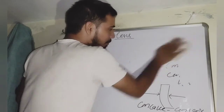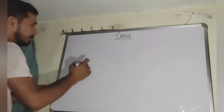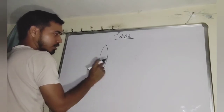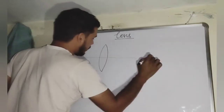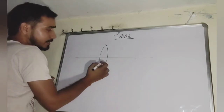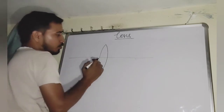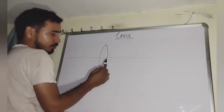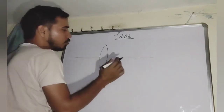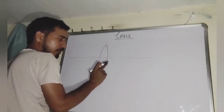We simply call a biconvex lens a convex lens. In a convex lens, both the left and right boundaries are convex, forming a biconvex or simply convex lens. Since this lens has two curved spherical surfaces, corresponding to each curved surface it will have two radii of curvature and two foci.